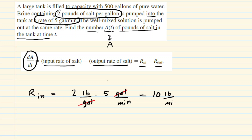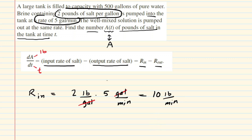This makes a lot of sense, because the differential equation was written as dA/dt — A was the number of pounds of salt and T is the time. So it should make sense that we would have, for the rate in to the tank, pounds per minute. So far, so good for R_in, but we also need an expression for R_out.